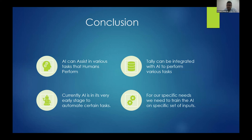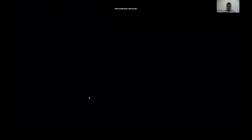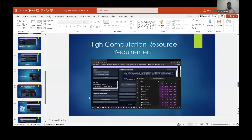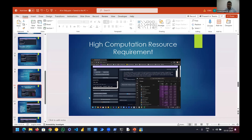In conclusion, AI can assist to perform various human tasks. Tally can be integrated with AI to perform tasks we usually do — it can read documents, pass entries, and check entries. At the current stage this full automation is not possible, but integration is eventually possible and AI can even help with audits. Currently AI is at a very early stage. For our specific needs, we need to train AI on specific inputs. Thank you everyone.